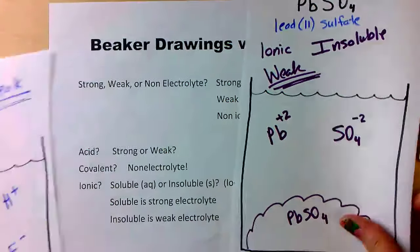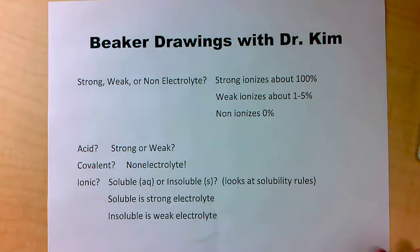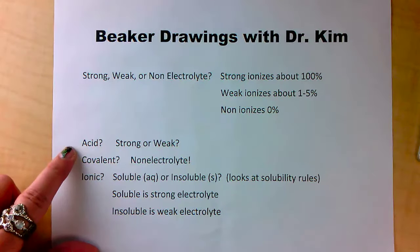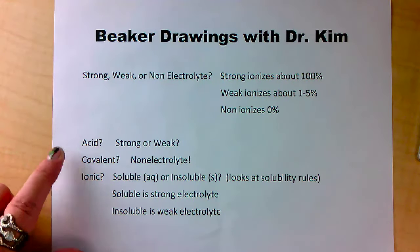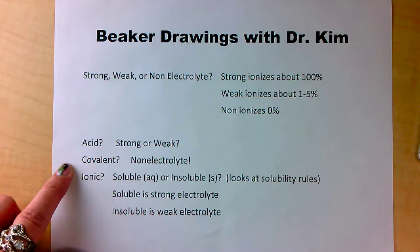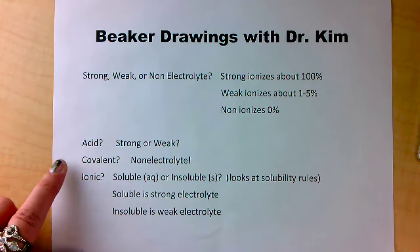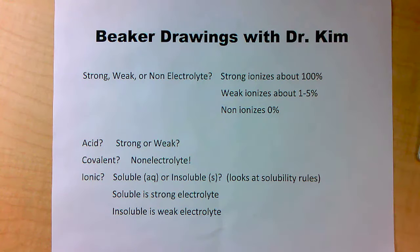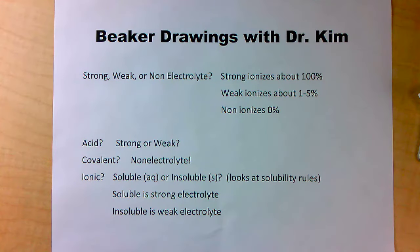We saw several examples today: a strong acid, a weak acid, a covalent molecule (a sugar), and a soluble and an insoluble ionic compound — and how to draw them all in beakers of water. I hope this helps you with drawing your beaker drawings. Good luck. See you next time.